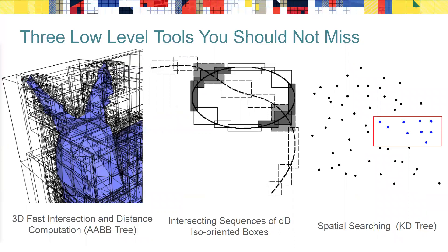I've put three low-level tools together that we use all over the place in CGAL and they merit being mentioned separately. The AABB tree — Axis-Aligned Bounding Box tree — enables you to do ray shooting, determine all faces that intersect a query plane, and find the closest triangle to a point in XYZ, to name but a few applications.